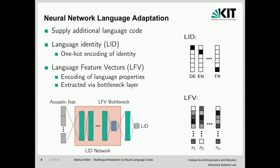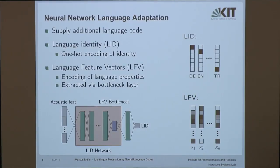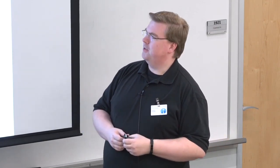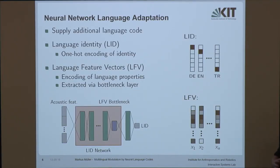How do those language codes look? At the beginning we started with a very simple approach: just a simple bit vector where one dimension represents one particular language. We added this to the acoustic features input to the network and saw some gains, but those arbitrary features don't represent actual language properties. So we wanted a richer representation — language feature vectors.